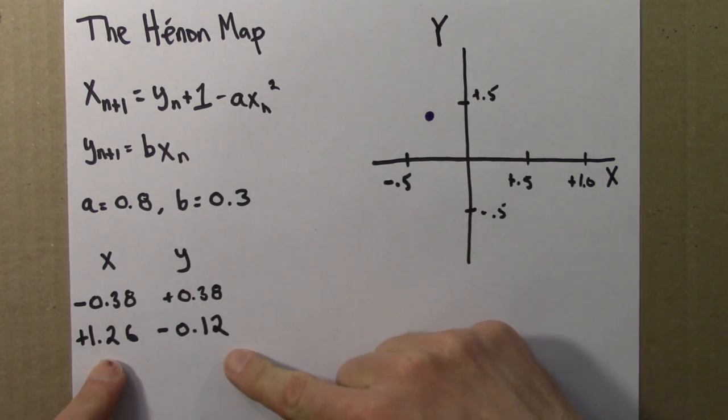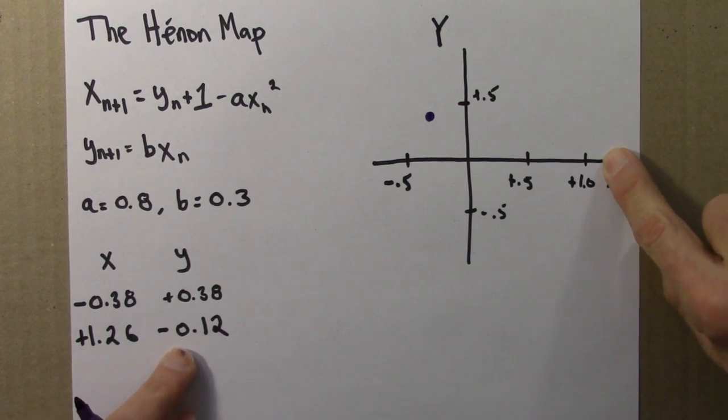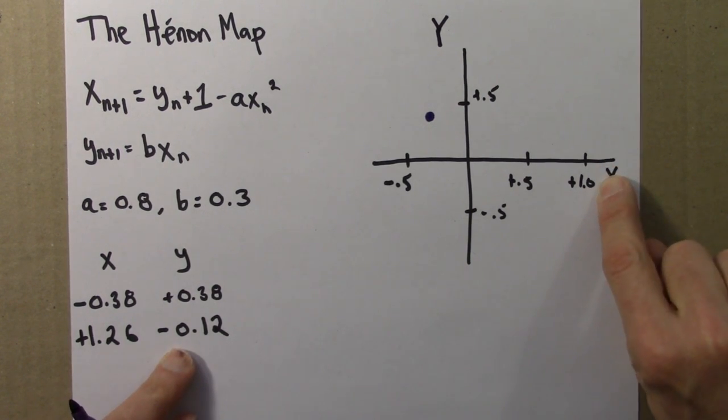Then the other point, plus 1.26, that's out about here, minus 0.12, that's probably around here.